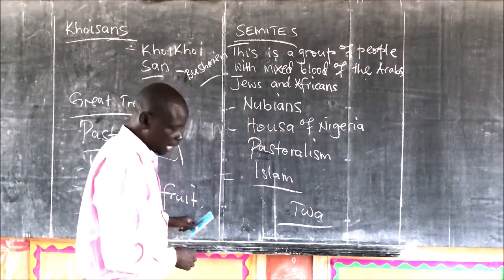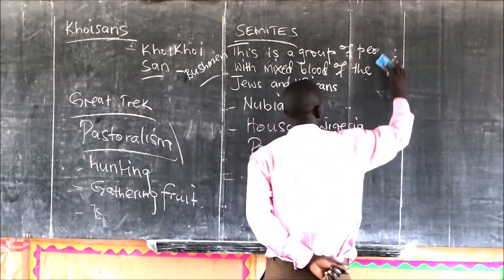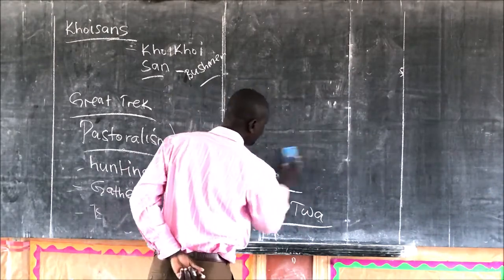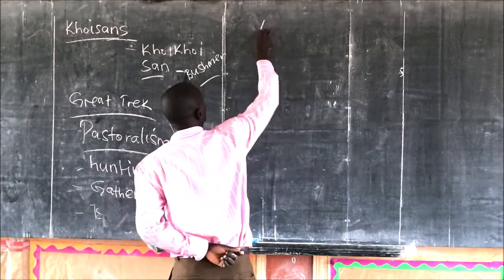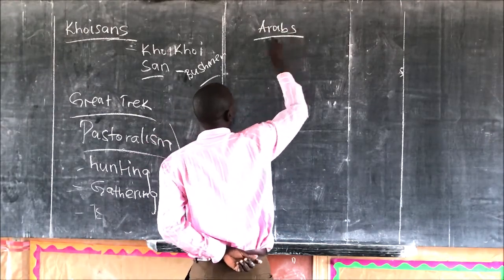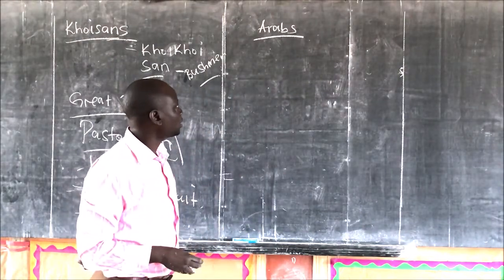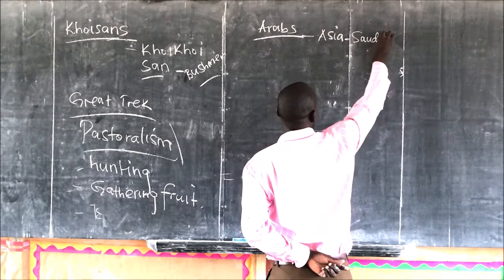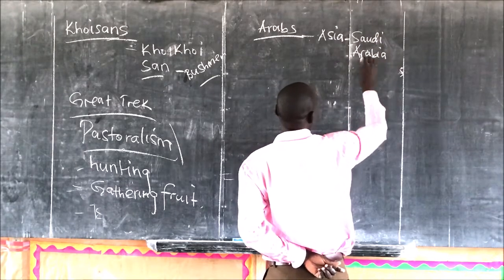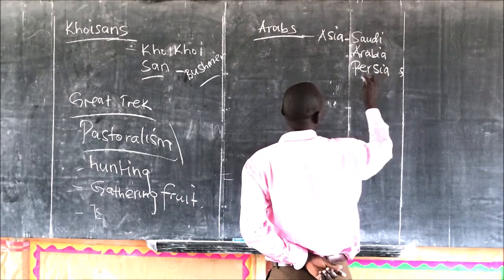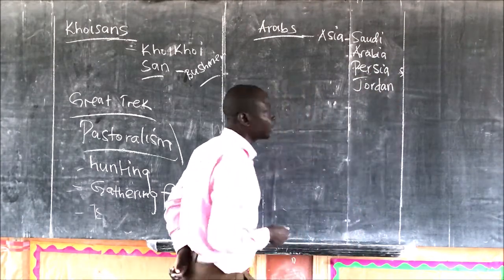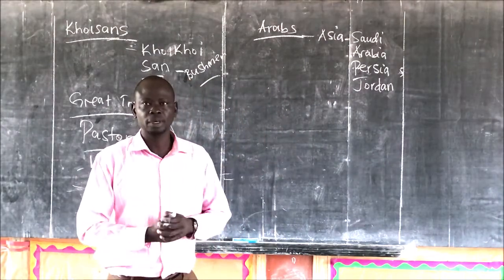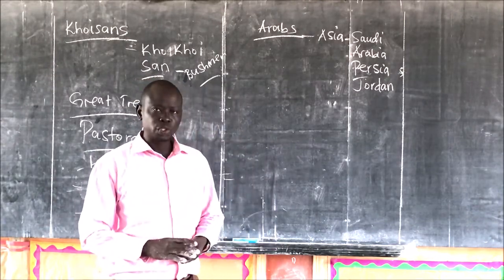Now let's also look at the northern part of Africa. We talked of the Berbers and the Tuaregs. We are now looking at the Arabs — a group that lives in Africa but originally came from Asia, especially countries like Saudi Arabia, Persia, and Jordan. These people came to Africa mainly for the purpose of trade, but others came fleeing religious wars or to spread Islam.